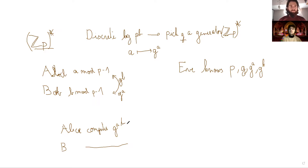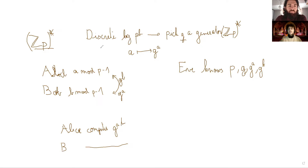So Eve cannot find out the value of G to the AB. Of course, all this is very ideal. There are attacks on such algorithms, and there are choices of P and G that are not ideal. In general, nowadays this algorithm is performed with the group of points of an elliptic curve instead of ZP star. But the point is that you can, in such a way, exchange a password on an insecure channel.